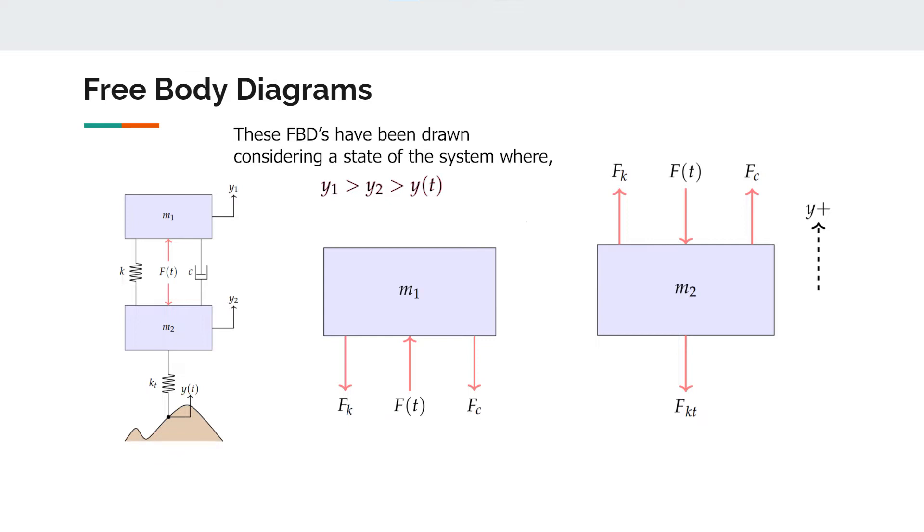The directions of these spring forces which are acting on each mass depends on the relative velocity of the interested end of the spring with respect to the other end. Directions of the damper forces depends on the relative velocity of the interested end with respect to the other end of the damper. When I was drawing these free body diagrams, I determined the directions of the forces considering a state of the system with this relationship between displacements.